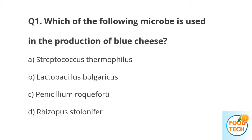Question number 1. Which of the following microbes is used in the production of blue cheese? A. Staphylococcus thermophilus. B. Lactobacillus bulgaricus. C. Penicillium roqueforti. D. Rhizopus stolonifer.